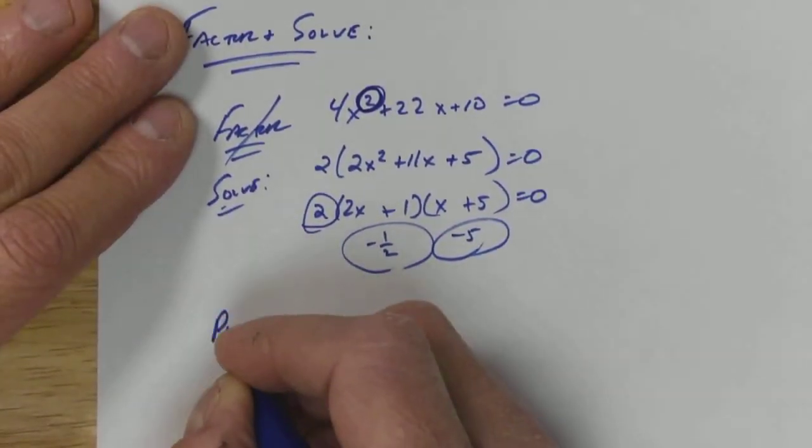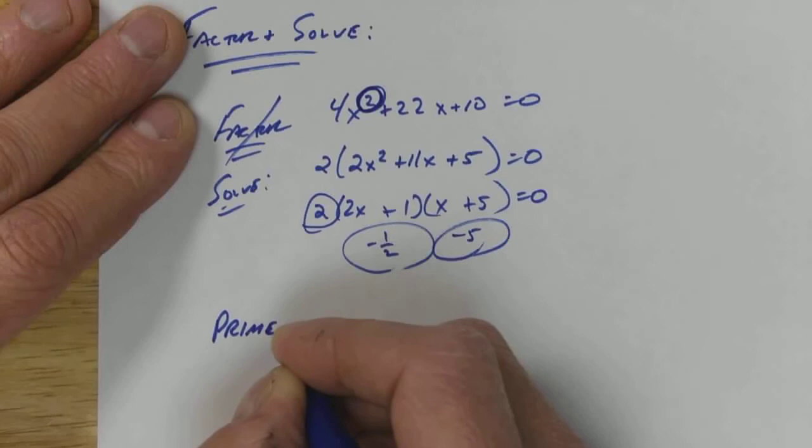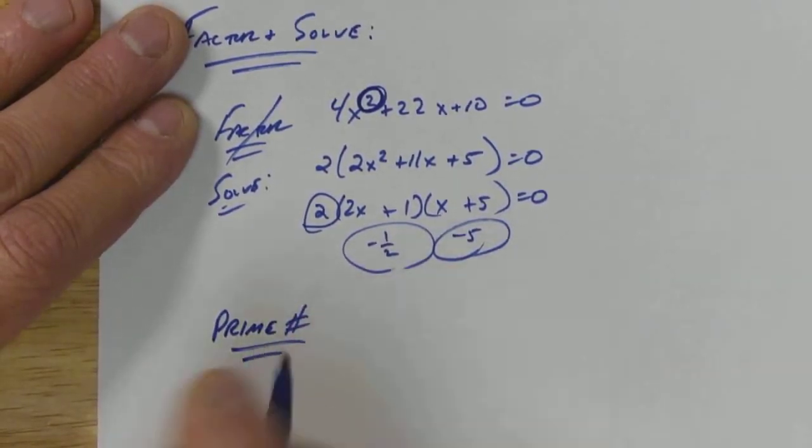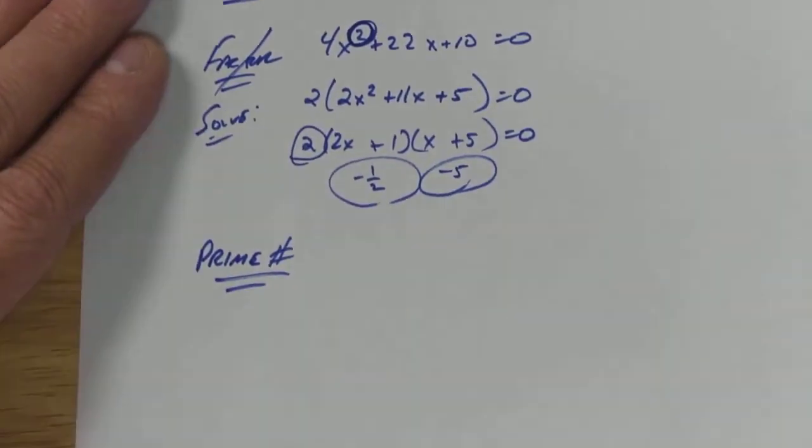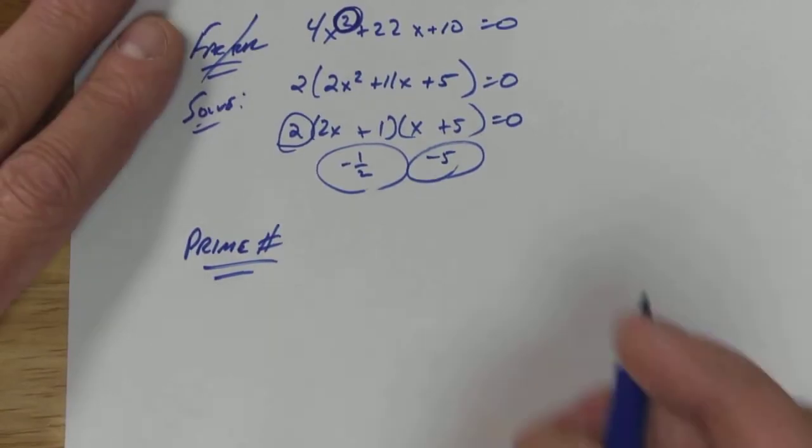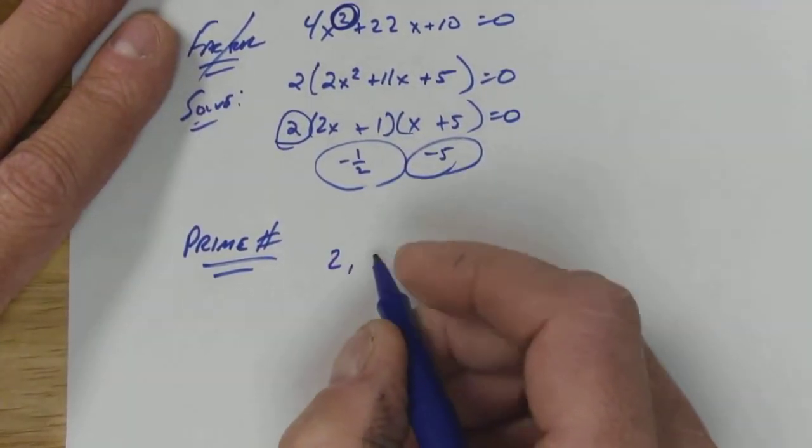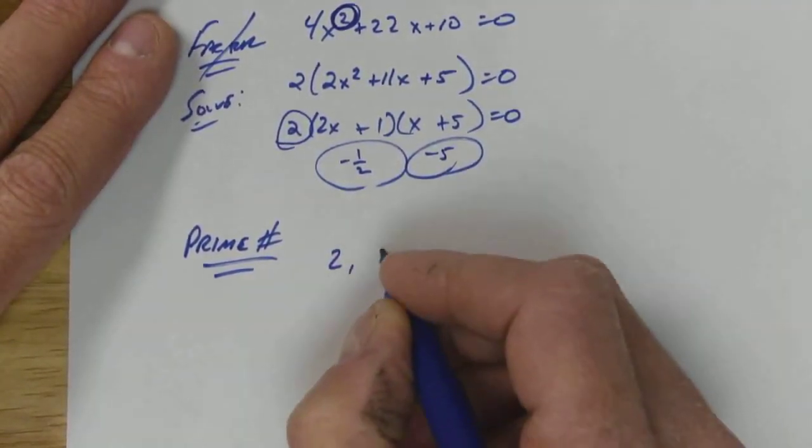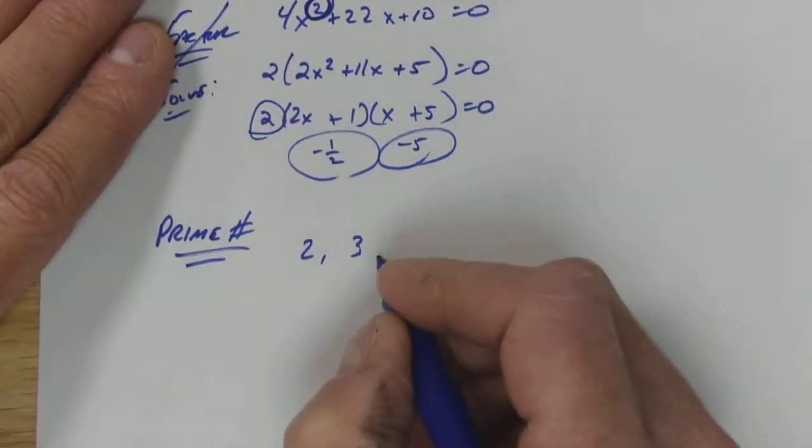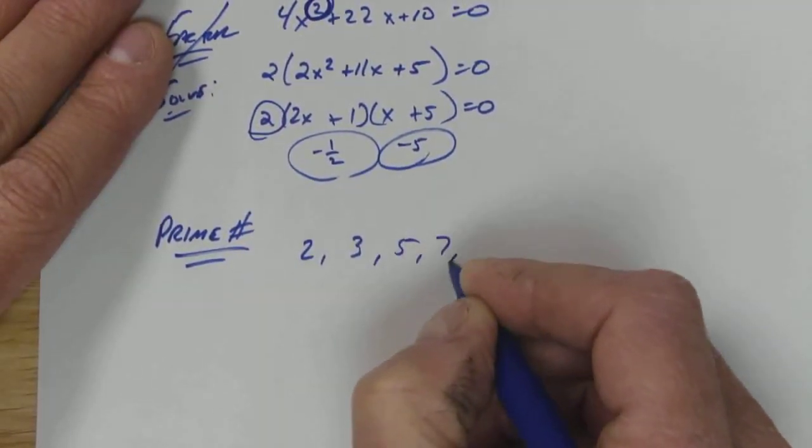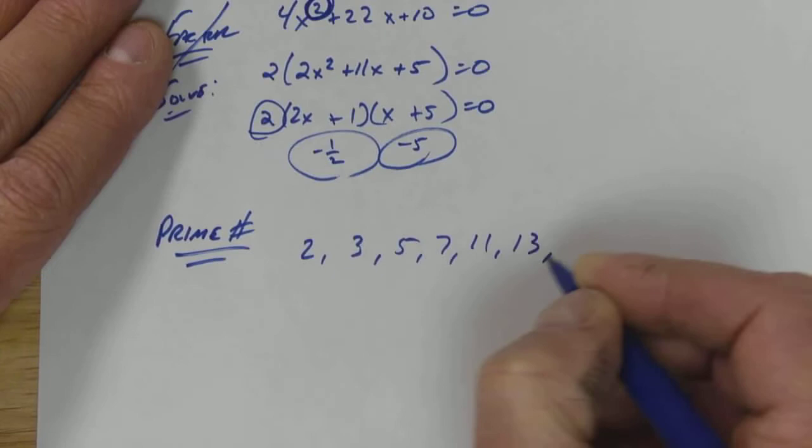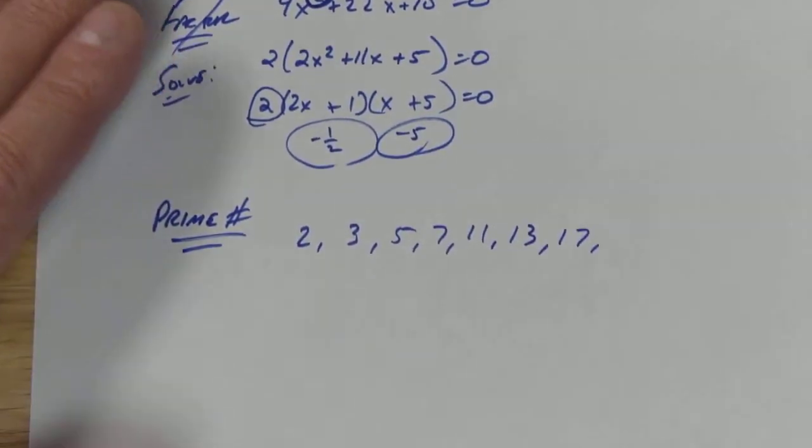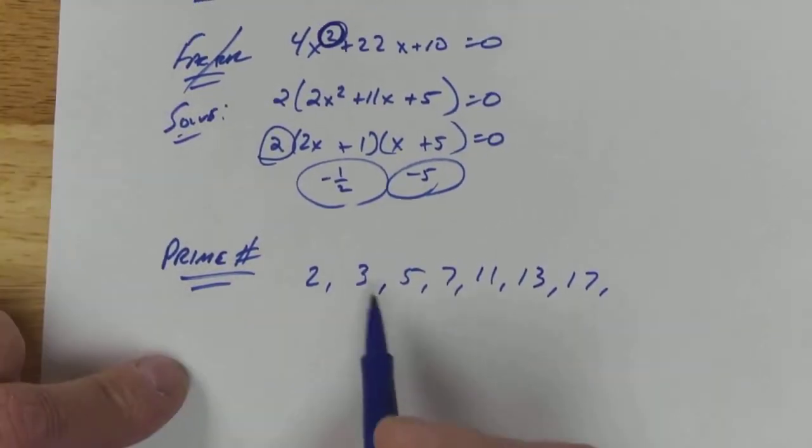Okay, another thing I want to talk about: a prime number. Hopefully you guys know what a prime number is. A prime number is a number that has only two factors: one and itself. So 2 is prime because it's 1 times 2. 3 is prime, 1 times 3. 5, 7, 11, 13, 17, and so on.